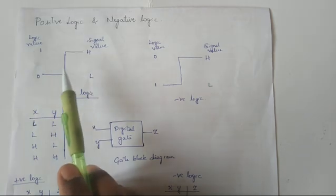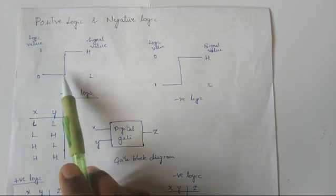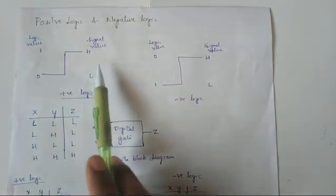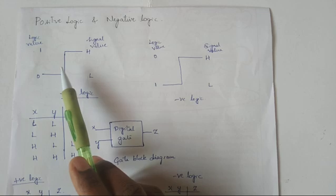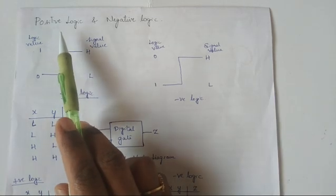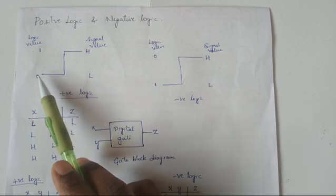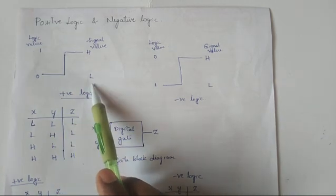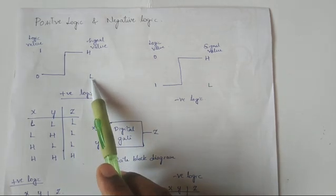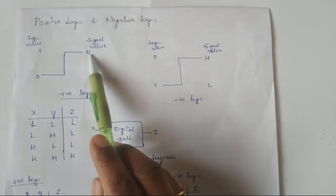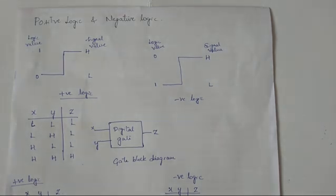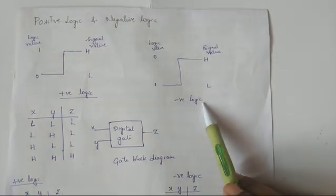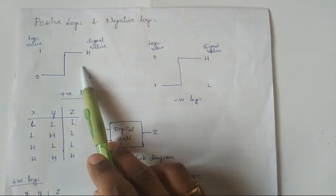In positive logic, if we choose 1 to represent H and 0 to represent L, that is called positive logic. By default in our labs we use positive logic, meaning the signal value L is represented by 0 and the signal value H is represented by the logic value 1. Now let us discuss negative logic — negative logic is the reverse of positive logic.